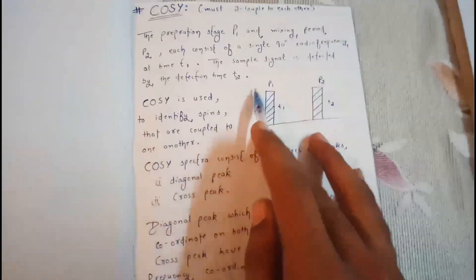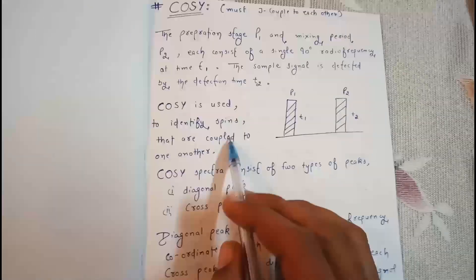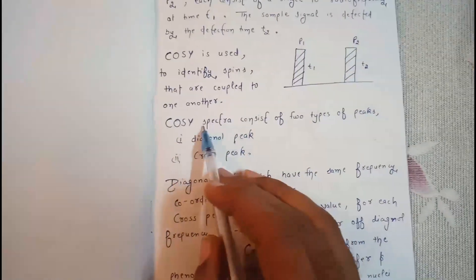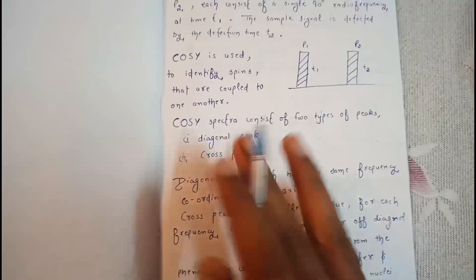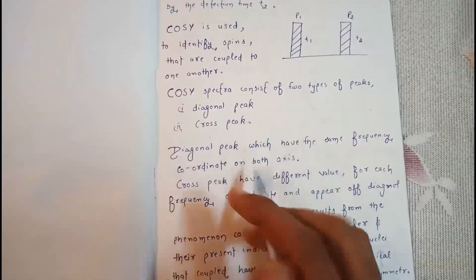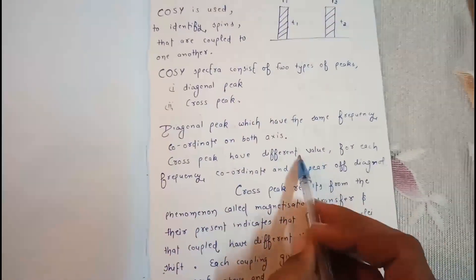COSY is used to define the coupling. It is used to identify spins that are coupled to one another — only those spins that are coupled to one another are identified. COSY spectra consist of two types of peaks: diagonal peaks and cross peaks. Diagonal peaks have the same frequency coordinates on both axes.